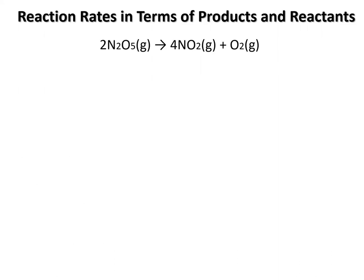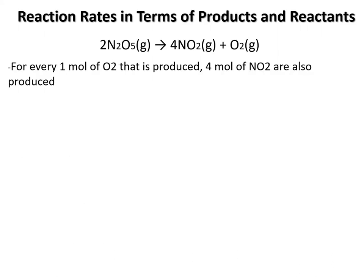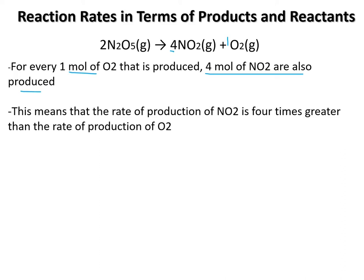So there is our balanced equation. So let's set this up. So for every one mole of O2, notice there's a one in front. We've got four moles of NO2 are being produced. So we could compare those. So this means the rate of production is four times that of the oxygen, because there's a four in front of the nitrogen dioxide.